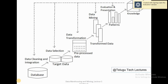We do data selection along with attributes. We collect the data and apply the transformation. As we apply the transformation, we perform aggregation operations. The final data transformation is complete, and the final task is data mining.